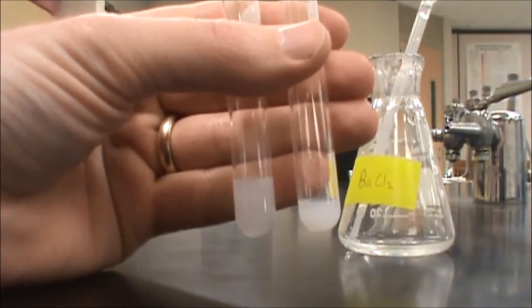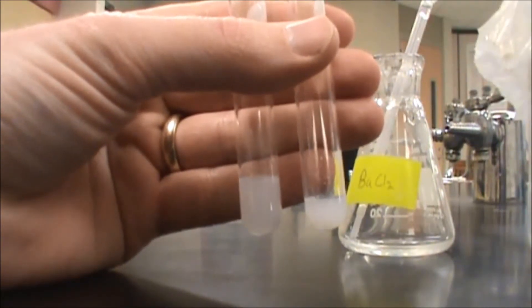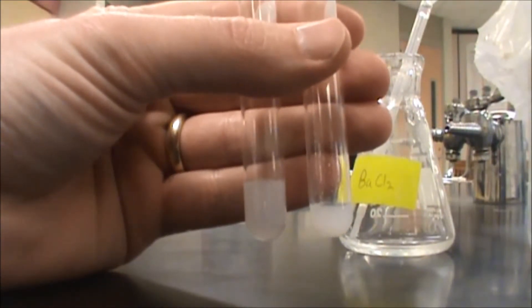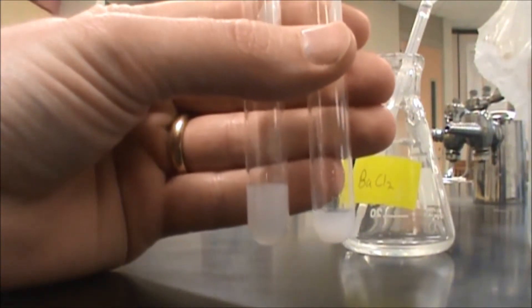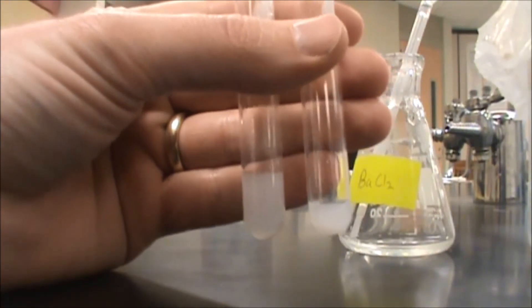And then what we're going to do next is we're going to add concentrated hydrochloric acid to it. So sulfate will not dissolve when the concentrated hydrochloric acid is added to it. So the barium chloride is insoluble in that acid, even if I add a couple drops.